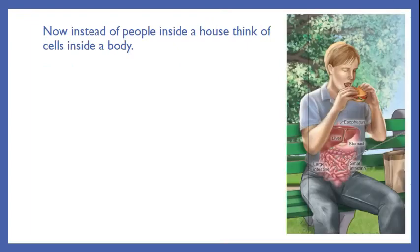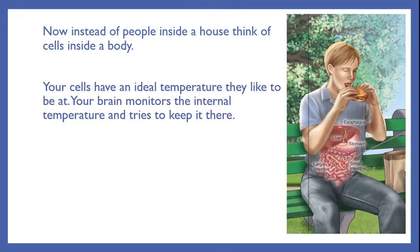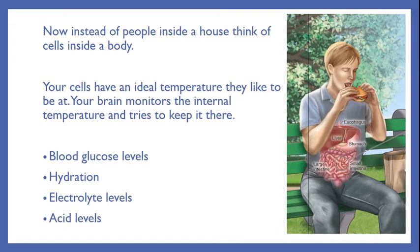Now instead of people inside a house, think of cells inside a body. Your cells have an ideal temperature they like to be at too. Your brain monitors the internal temperature and tries to keep it there. In addition to internal temperature, your blood has a glucose level it likes to stay at, a certain level of hydration, electrolyte levels it needs for optimum performance, and acid levels in the stomach that need to stay at just the right amount. The pH of your blood is 7.4 — if it goes any lower than 7.3 we have to use buffers to bring it back, and if it goes any higher than 7.45, we have to use something to bring it down. In all of these areas, we have that internal thermostat trying to maintain that perfect balance.